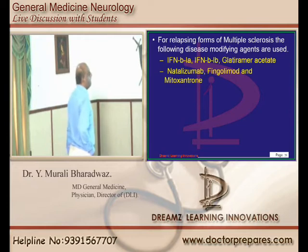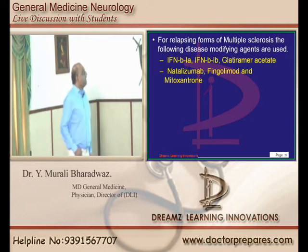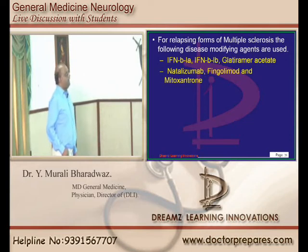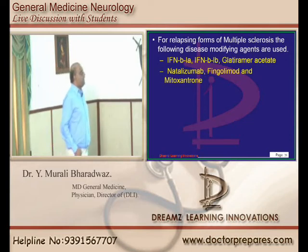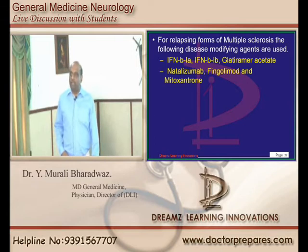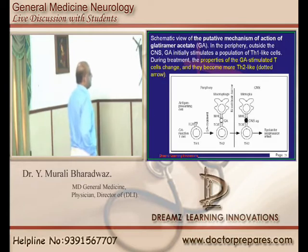The drugs used in relapsing forms of multiple sclerosis include interferon beta-1a, interferon beta-1b, glatiramer acetate, natalizumab, mitoxantrone, and fingolimod. These are the important group of drugs to remember.